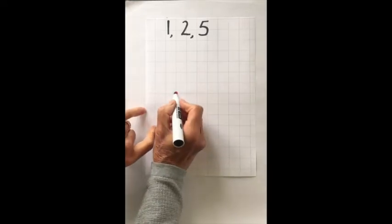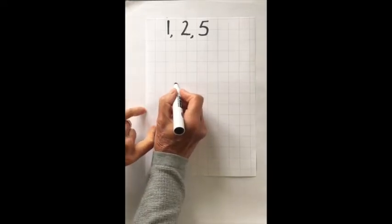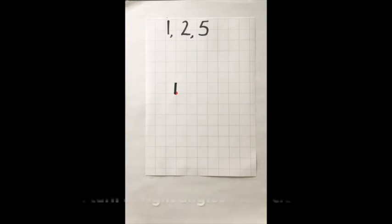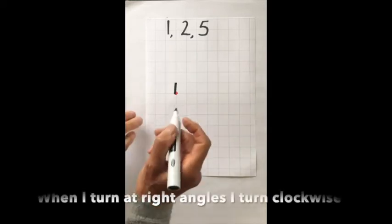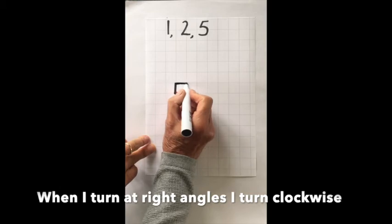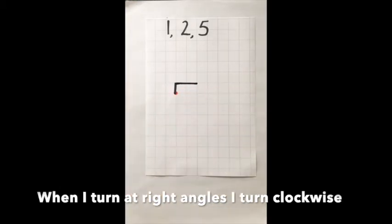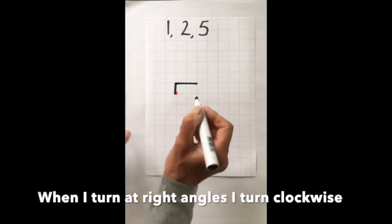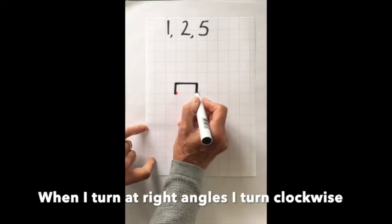I'm going to go one space up. I'm now going to turn at right angles, and I'm going to draw a line two spaces across. And finally, I'm going to turn at right angles again, and go five spaces down.